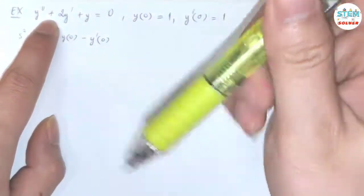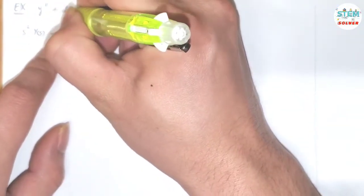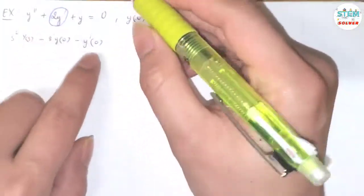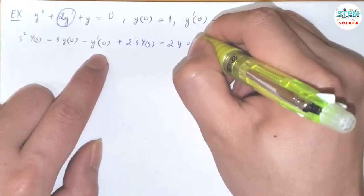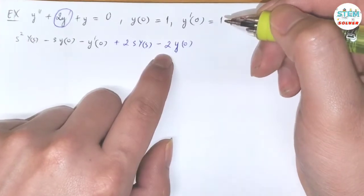Now for this one, let me use a different color here so you can see it clearly. Now I have 2y prime. So plus 2s capital Y of s minus 2 times y of 0. So don't forget to distribute the 2 here.